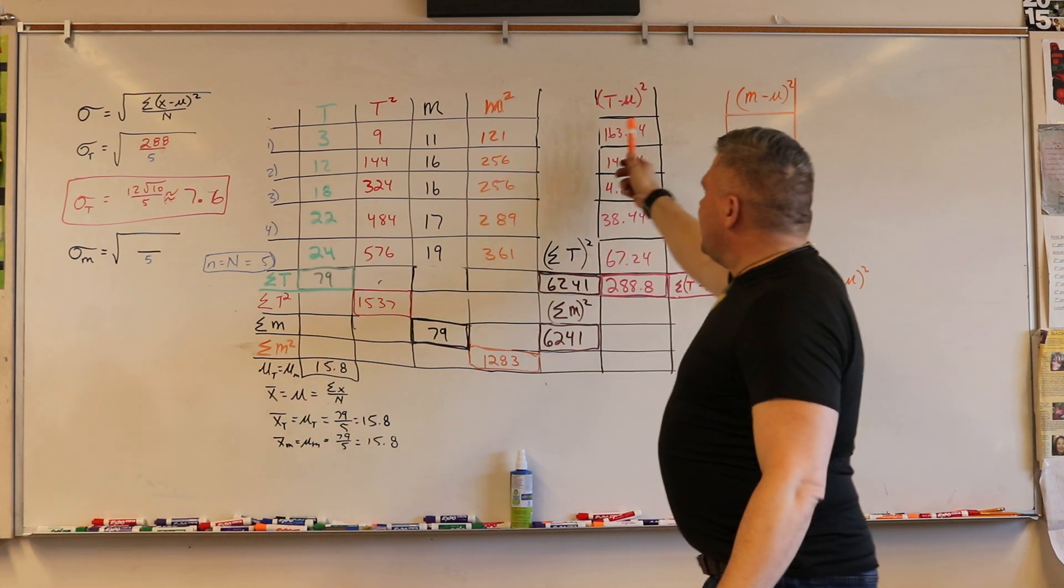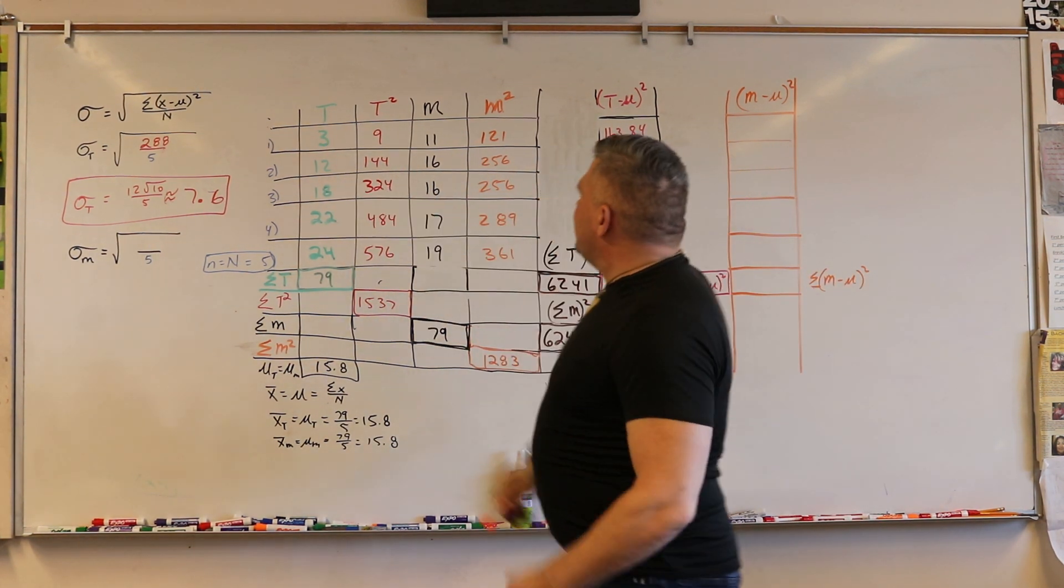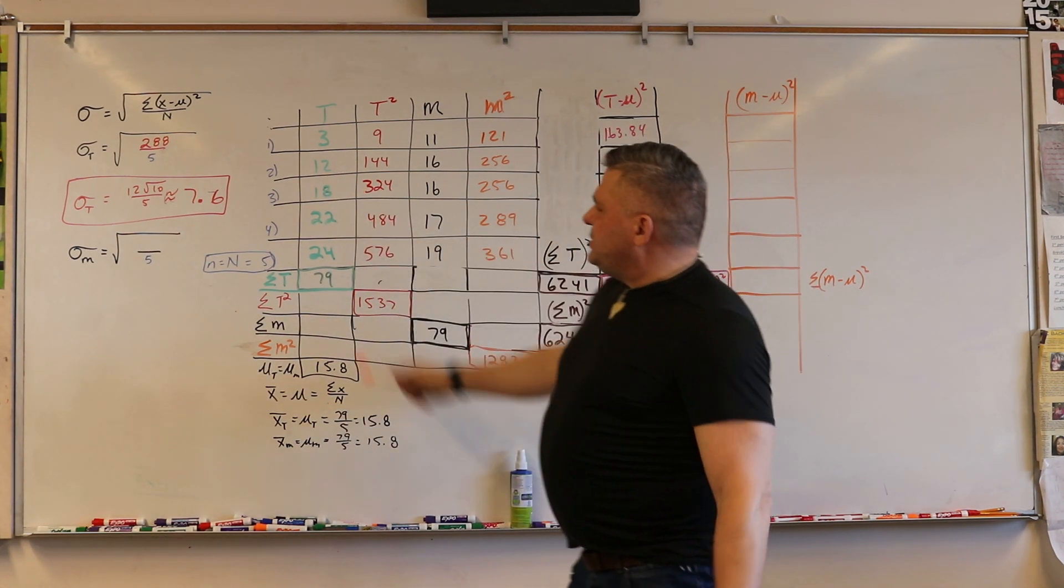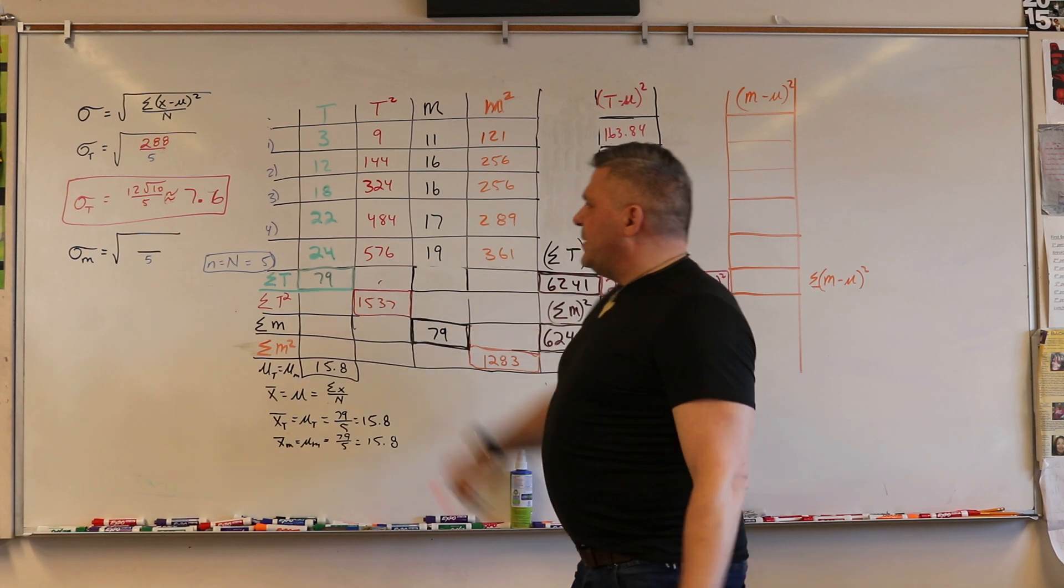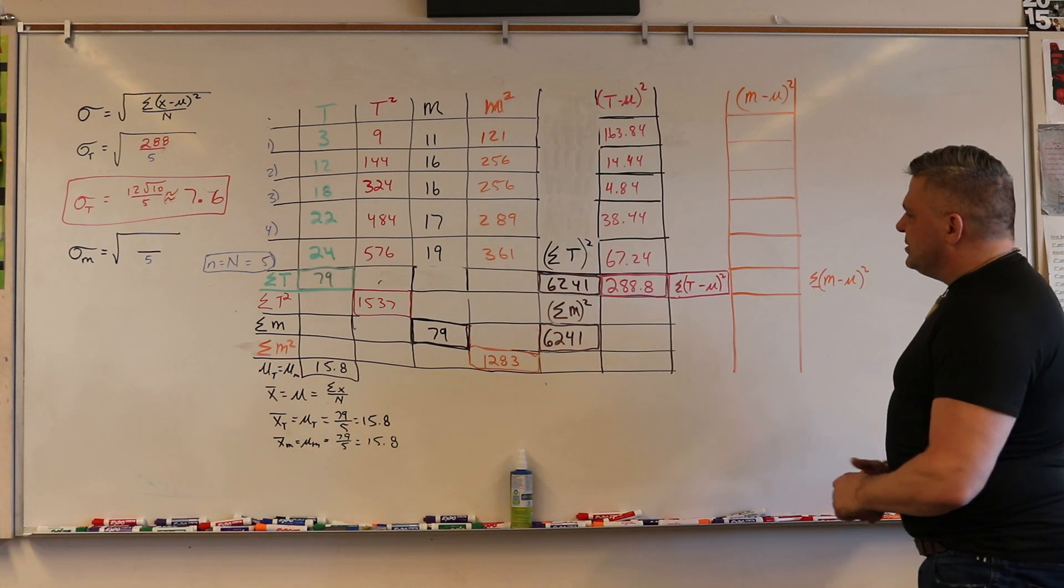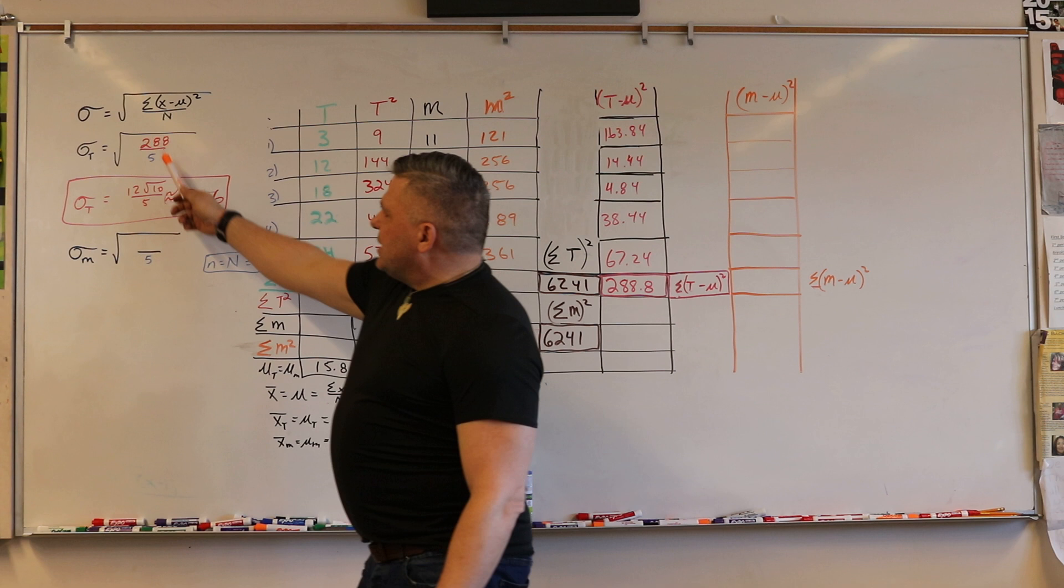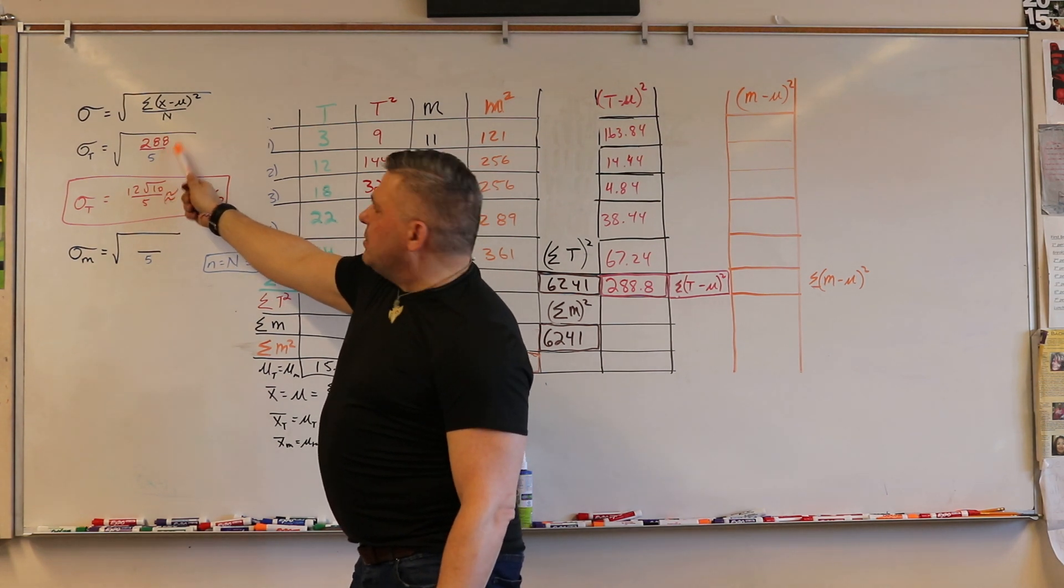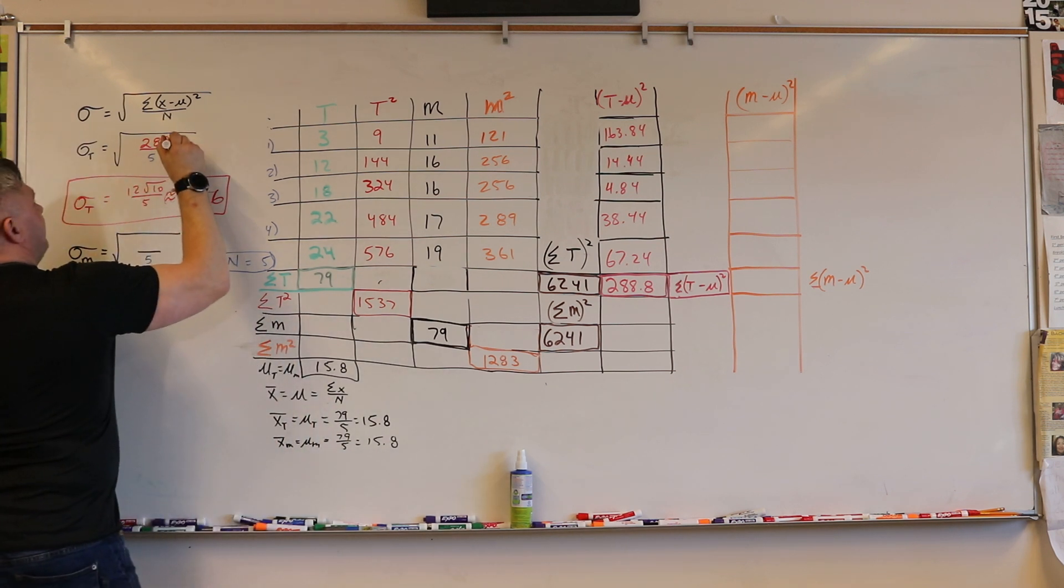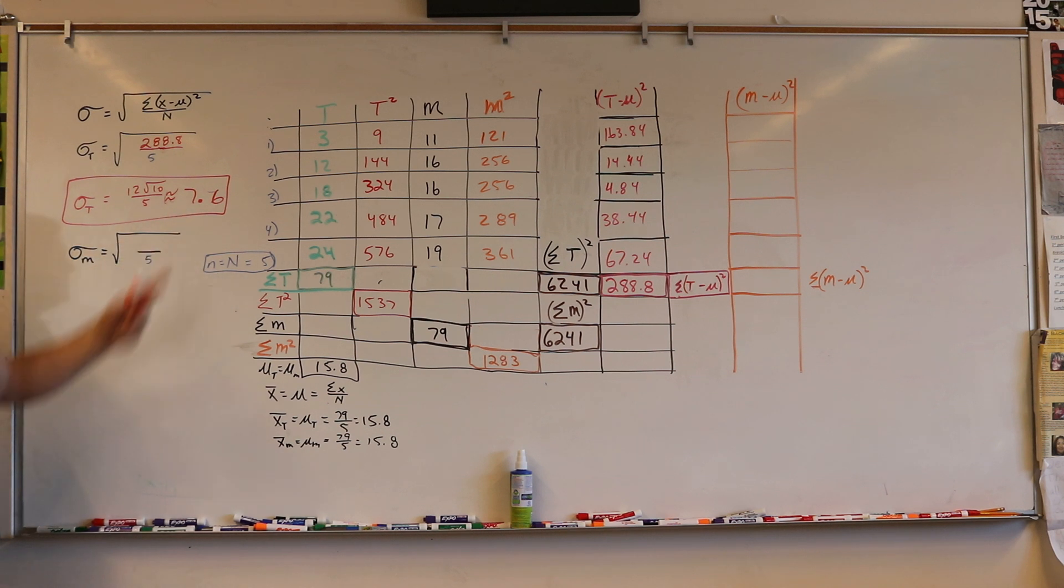When we found T minus mu, we were doing 9 minus 15.8 squared, 12 minus 15.8 squared, 18 minus 15.8 squared, 22 minus 15.8 squared, and 24 minus 15.8 squared. That came up with 288.8, so then we take that 288.8 and divide it by 5, and we got 7.6.